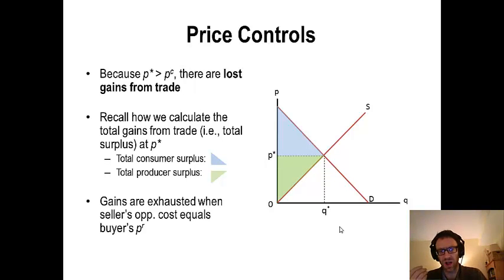The primary result of a sustained shortage is that there's going to be deadweight loss, lost gains from trade for both the buyer and the seller when the supply and demand curves look the way that they do here. To get a feel for this, look at an equilibrium case where you have this blue triangle measuring the consumer surplus, the green triangle measuring the producer surplus. Together, those measure the total gains from trade in the marketplace, in society.